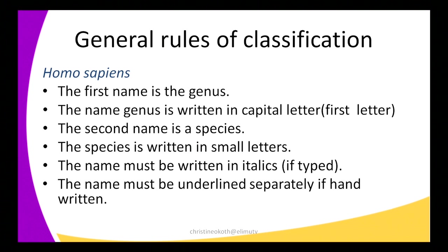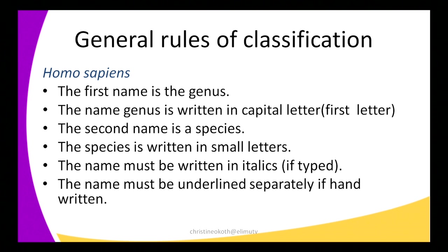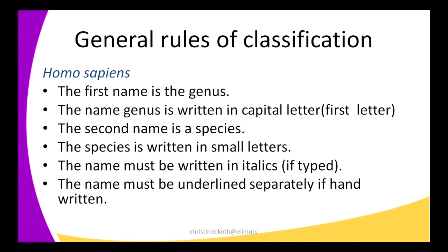So we look at the general rules we use when naming organisms. For example, I have the scientific name Homo sapiens, which is a human being. Rule number one: the first name is a genus. Looking at the example, the first name Homo is the genus. The genus name is written with a capital first letter — so the H in Homo is a capital letter while the other letters are written in small letters.